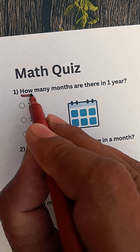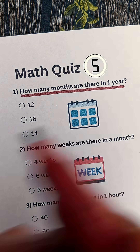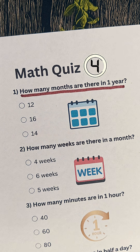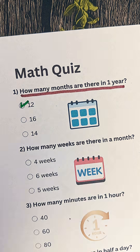Question 1. How many months are there in one year? Answer: 12.